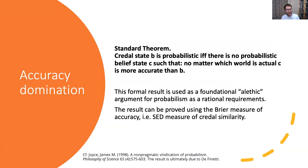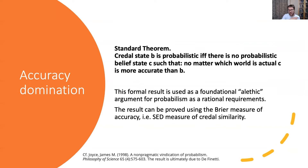Why are people excited about this? It's all based around this theorem, which gives you a characterization of when credences can be probabilistic. A credal state is probabilistic in the standard sense — satisfying the laws of probability — if and only if there's no probabilistic belief state C such that no matter which world is actual, C is more accurate than B. Basically, if you violate the axioms of probability, then there's going to be another possible credal state that you could be having that is guaranteed to be more accurate than you are. And that looks like a flaw.